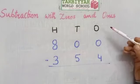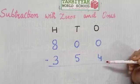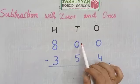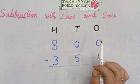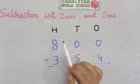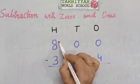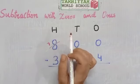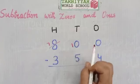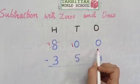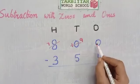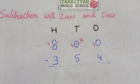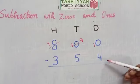First we subtract the ones place: zero minus four is not possible. Zero tens will not give any number, so zero ones will take borrow from 8 hundreds. 8 hundreds will become 7 hundreds and 0 tens will become 10 tens. Now 10 tens will give borrow to zero ones, so 10 tens become 9 tens and 0 ones become 10 ones.